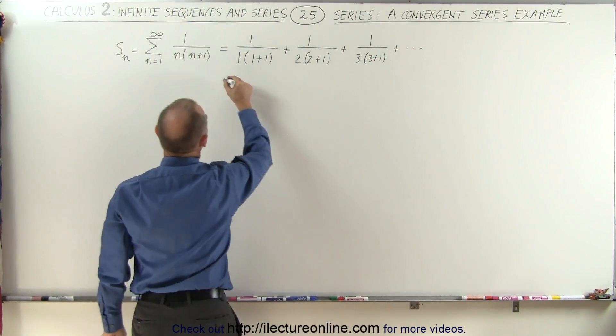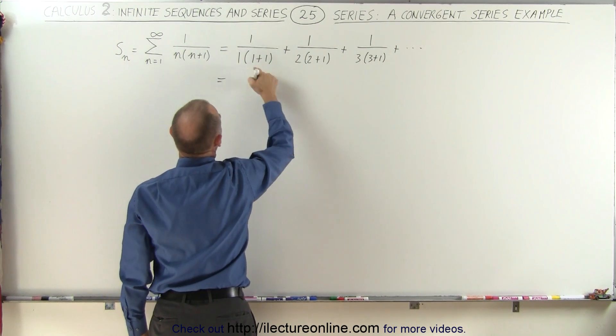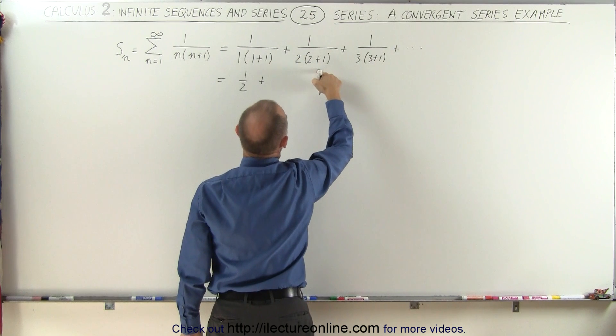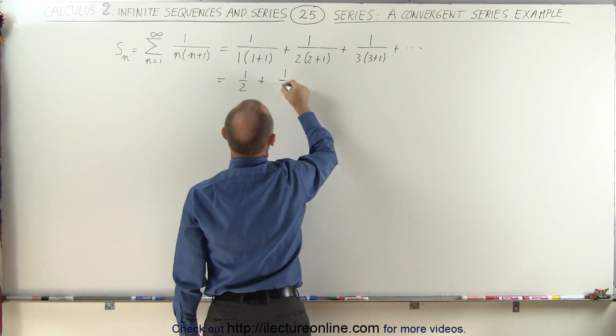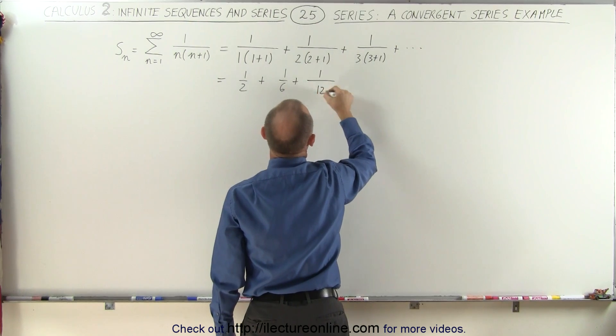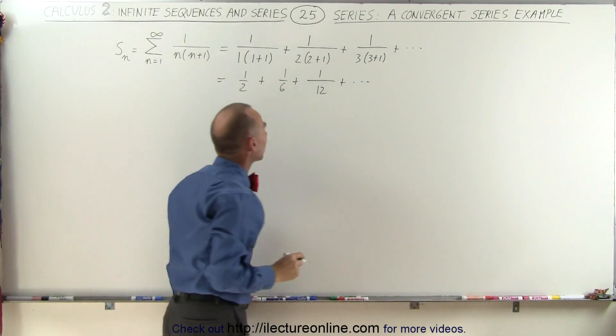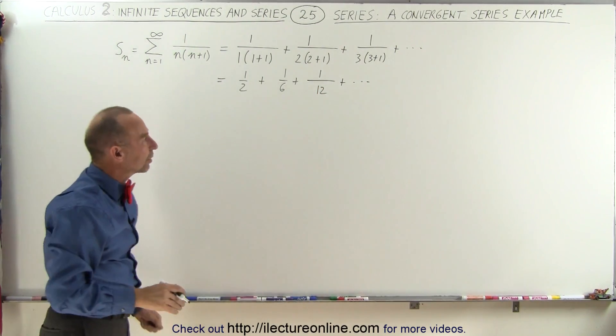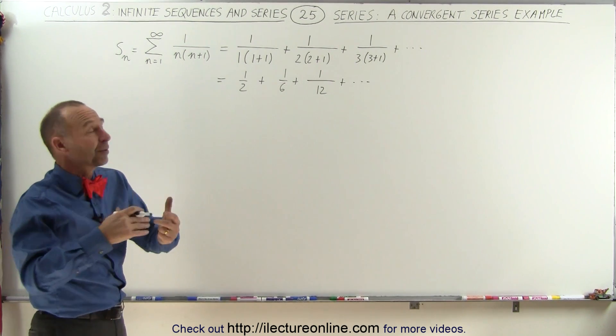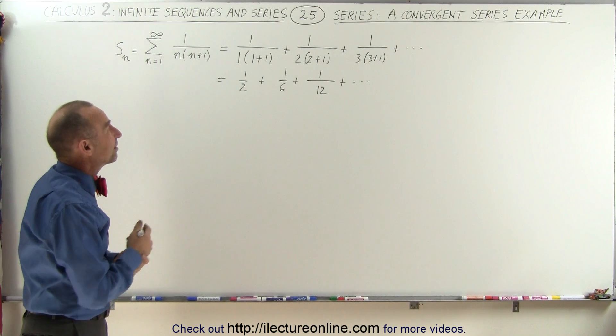And if we work this out, this becomes equal to 1 divided by 2, plus 1 divided by 2 times 3, which is 6, plus 1 divided by 12, and so forth. And if we're trying to find out what the total sum of the series is, there's some techniques that we can employ.